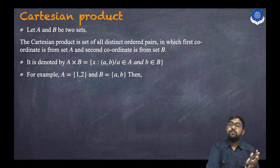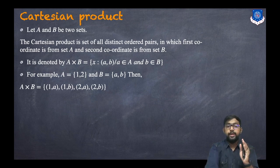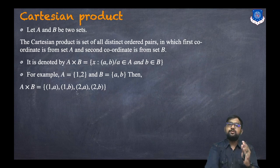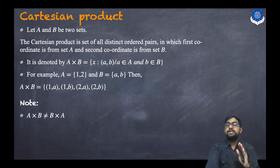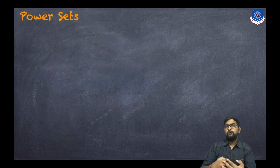For example, if A = {1, 2} and B = {a, b}, then A × B = {(1,a), (1,b), (2,a), (2,b)}, which contains four ordered pairs. Note that A × B ≠ B × A — the Cartesian product is not commutative and the order matters.